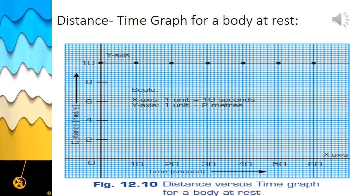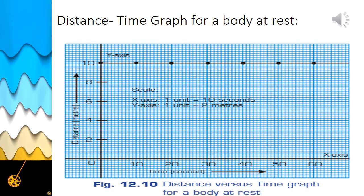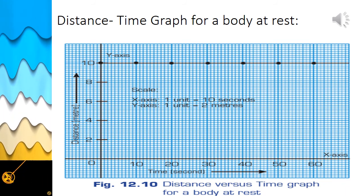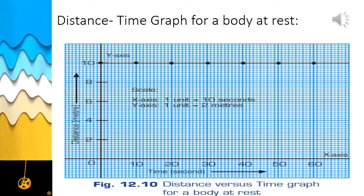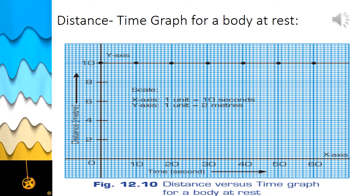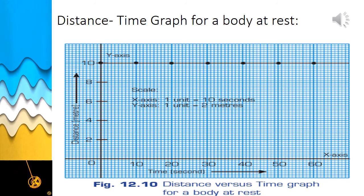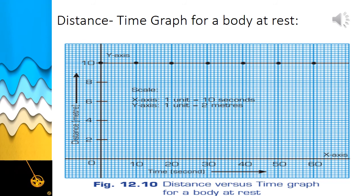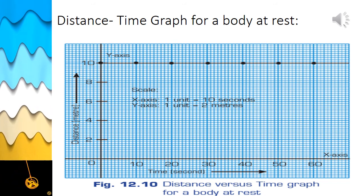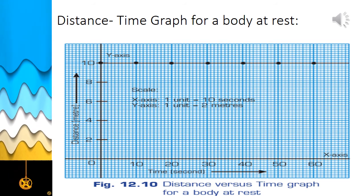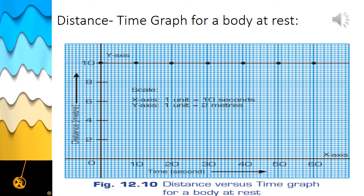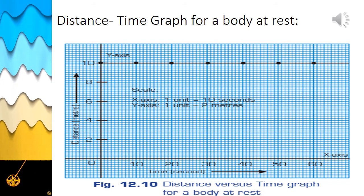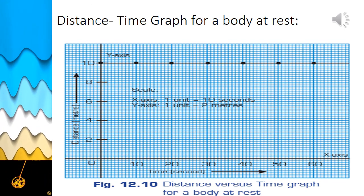Here is the distance-time graph for a body at rest. If a body does not change its position with time — that is, if the body is at rest — the distance-time graph will be a straight line parallel to the time axis, which is the X axis. So when the distance-time graph is a straight line parallel to the X axis, the body is at rest and stationary. The position of the line on the X axis will depend upon the distance of the body from the observer.